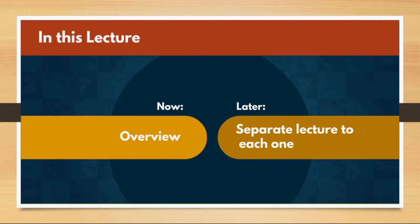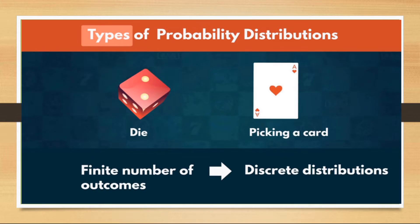In fact, we have a dedicated lecture on each of the distributions. So let's start. Certain distributions share some of the key characteristics, so we can group them together. Some, like rolling of a die or picking a card from a deck, have a finite number of outcomes, so they can be called discrete distributions.